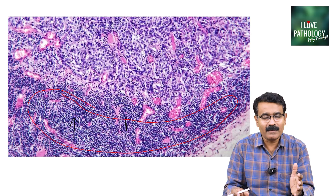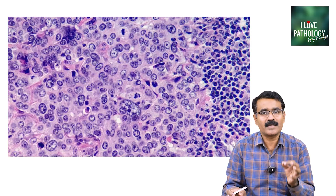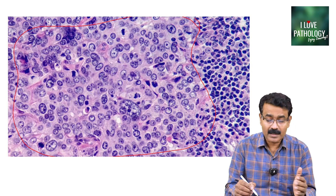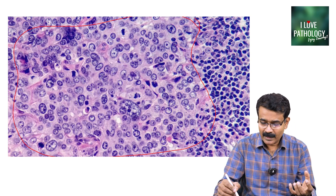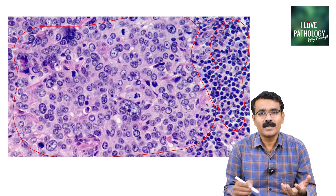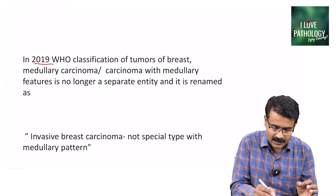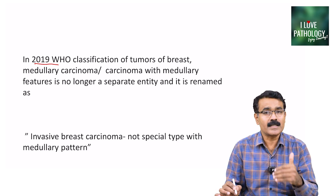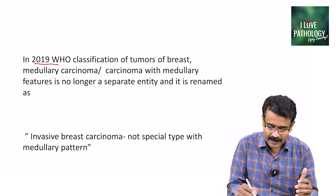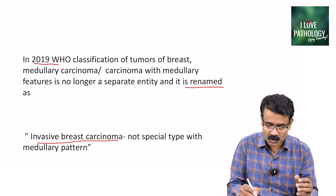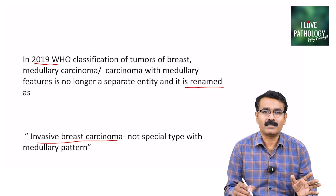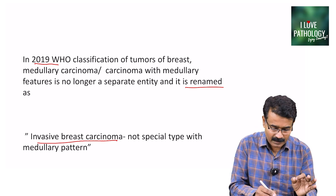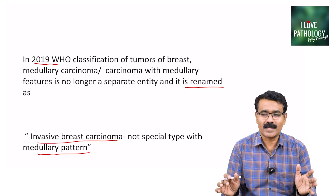This particular type is referred to as infiltrating duct carcinoma, medullary type. These are large polygonal sheets of cells with marked variation in size and shape of the nuclei, surrounded by lymphocytes. In the recent classification of breast tumors, this is no longer referred to as medullary carcinoma — it is renamed as invasive breast carcinoma, not special type, with medullary pattern. Remember, do not call this tumor medullary carcinoma; it is invasive duct carcinoma with medullary pattern.